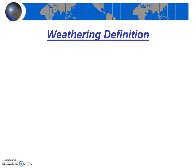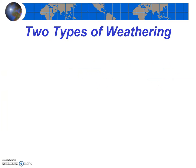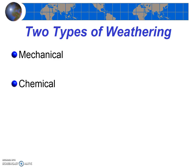When we look at the definition of weathering that you just wrote in your notes, we know that weathering is both the physical disintegration and also the chemical decomposition of rocks. So within that definition we see that there are essentially two types of weathering — mechanical weathering and chemical weathering.